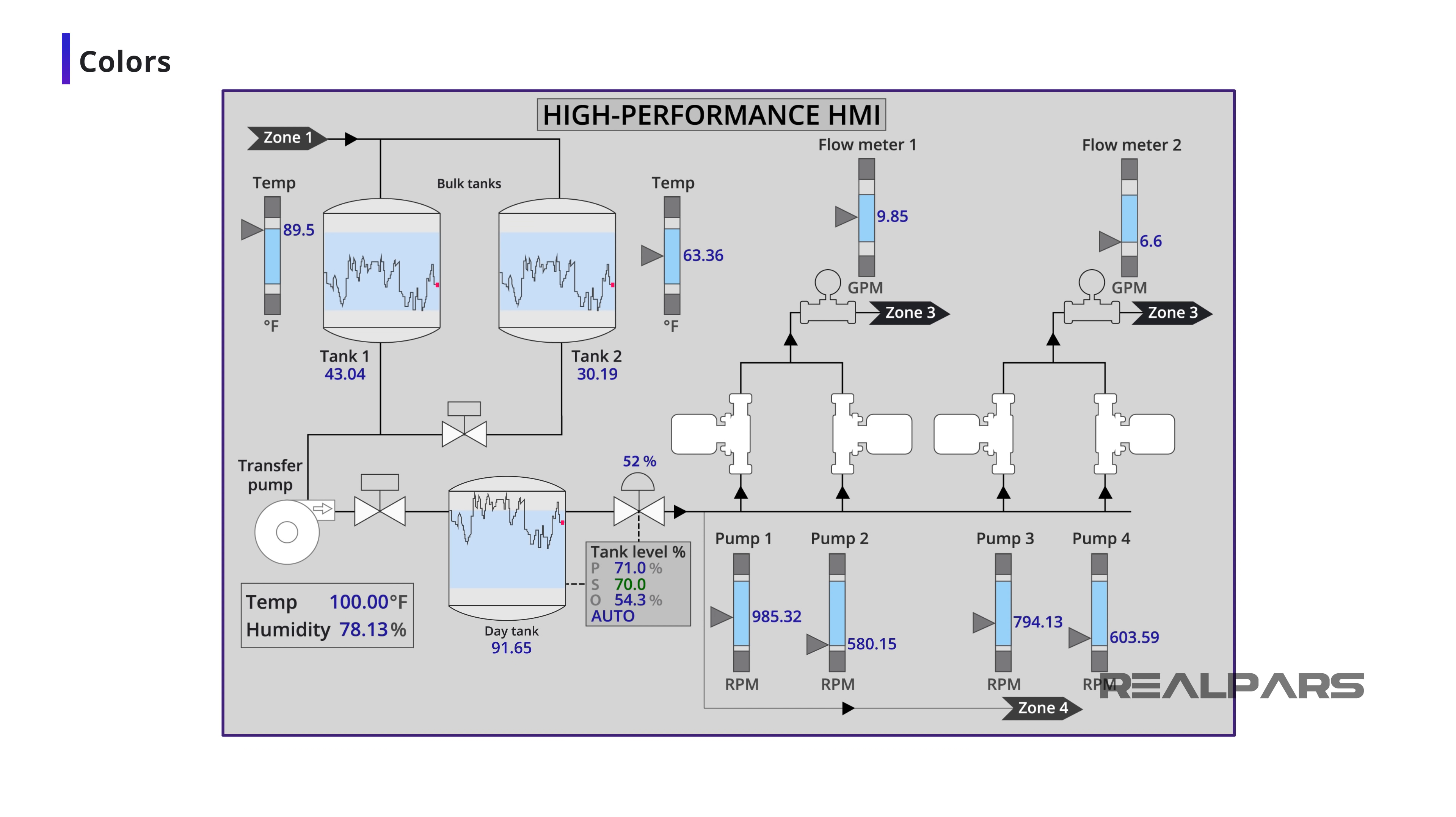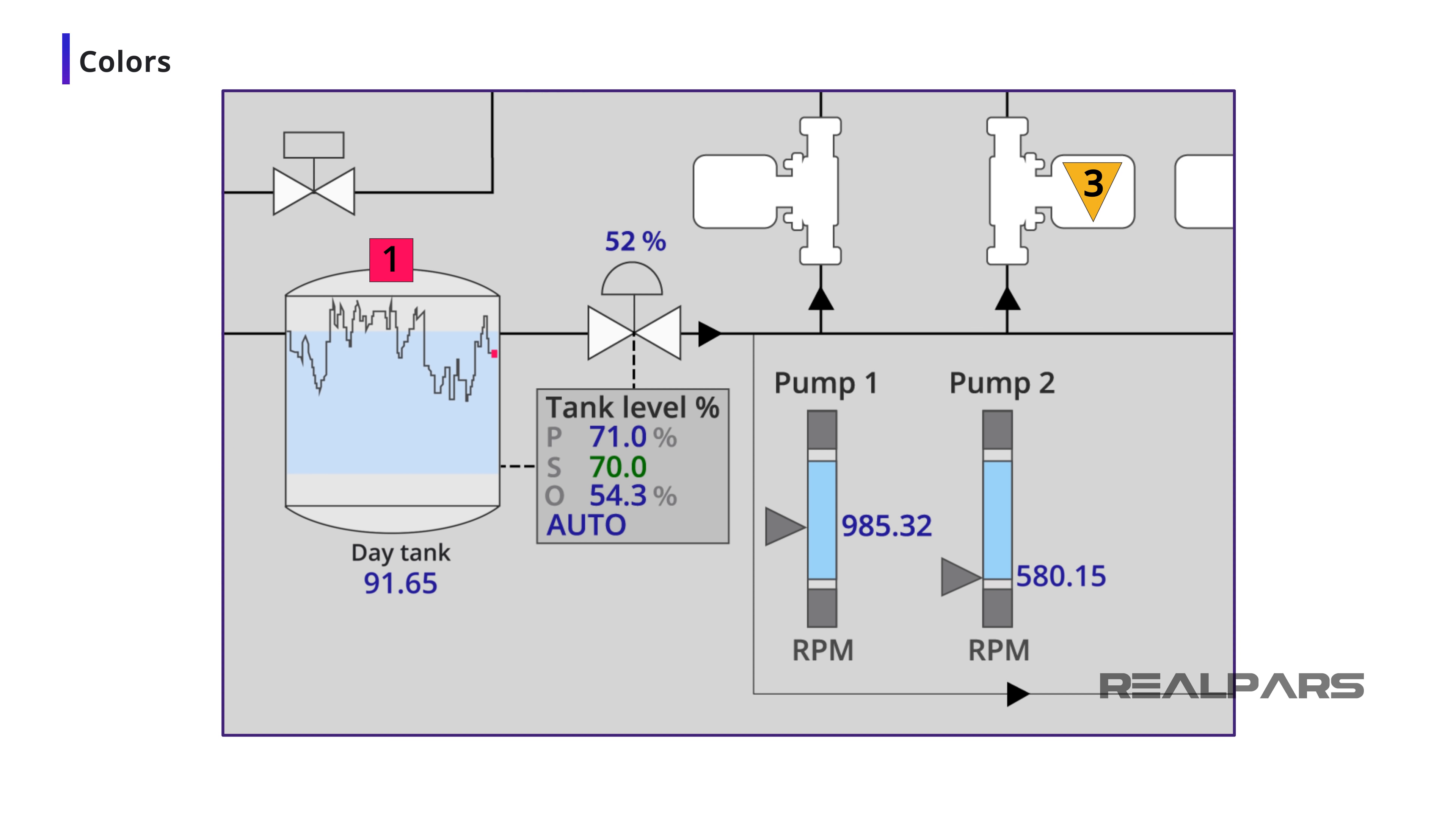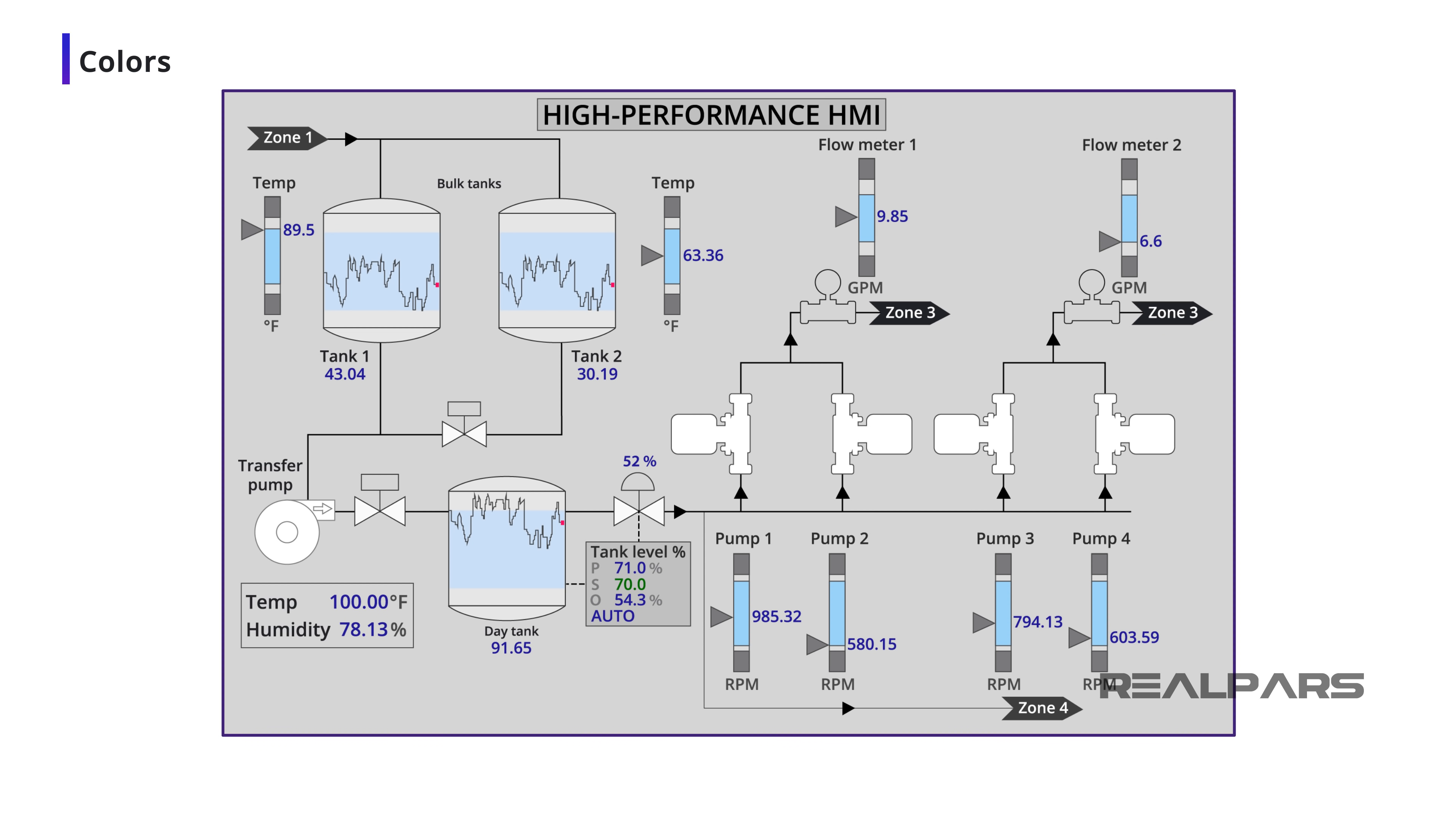Remember, the use of color in High-Performance HMI is to indicate an abnormal situation and is meant to draw the operator's attention quickly. If the process is running normally, then the screen should display little or no color at all.